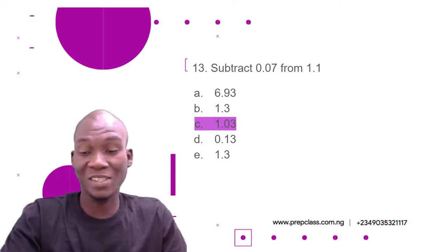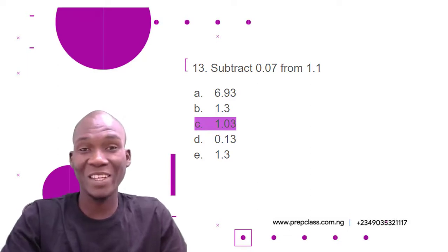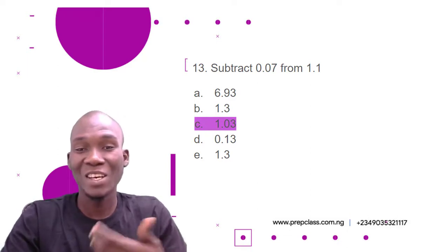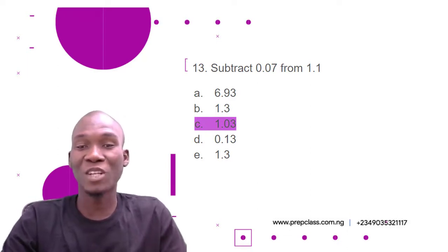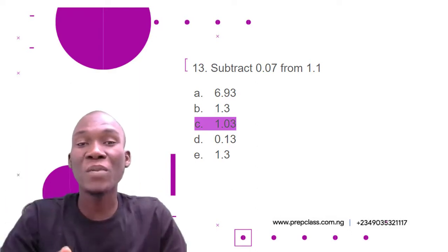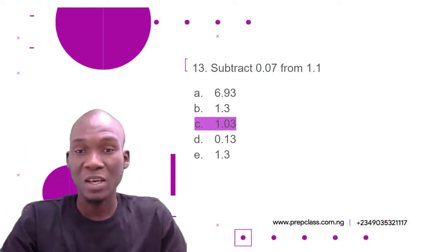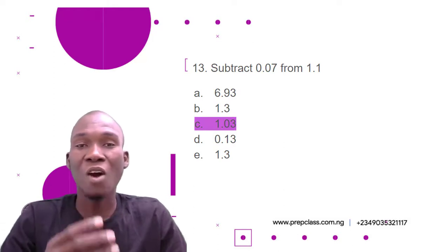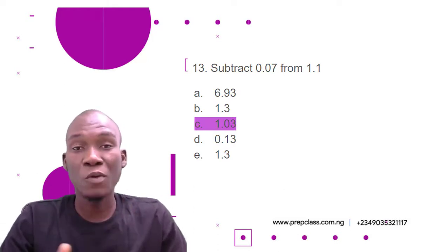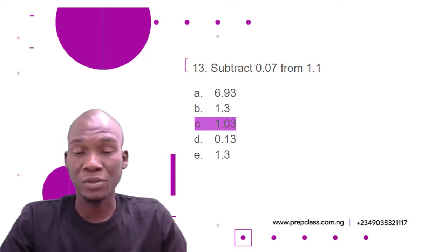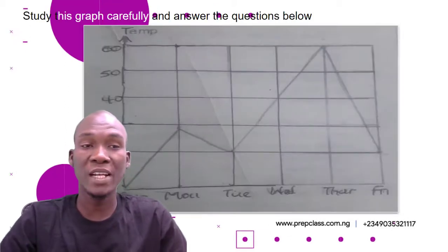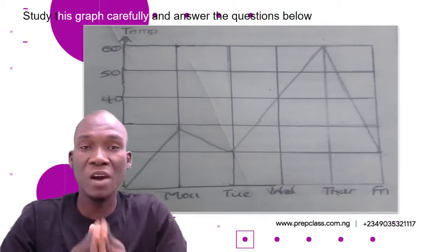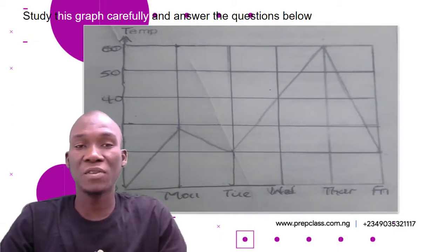That is obviously very easy. Performing subtraction with decimal numbers is the same way we perform it with ordinary numbers. Just make sure the decimal points are aligned under each other, then balance the numbers by adding zeros. Now let's move to the next question. We have a graph here — study this graph carefully and answer the questions below.